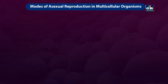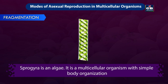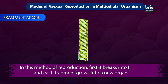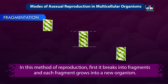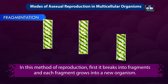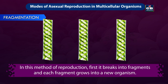Now let us see the methods of asexual reproduction in multicellular organisms. Fragmentation: Spirogyra is an algae — a multicellular organism with simple body organization. It reproduces by fragmentation. In this method, the organism breaks into fragments and each fragment grows into a new organism.